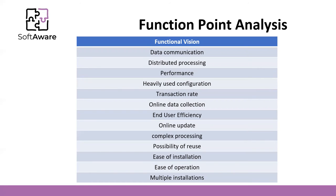In the function point analysis, we must rate the following system characteristics: data communication, distributed processing, performance, heavily used configuration, transaction rate, online data collection, user efficiency, online update, complex processing, possibility of reuse, ease of installation, ease of preparation, and multiple installations. We must rate each one from 0, not present, to 15, strongly present.